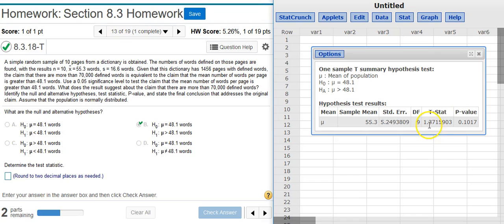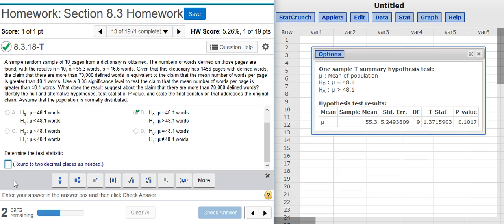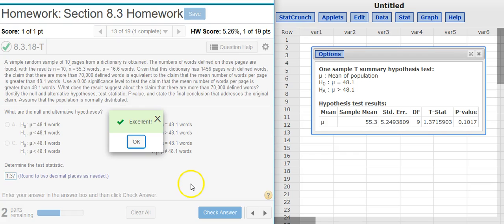Now I've got everything I need. I press Compute, and here my results window. Second to last value is the test statistic. I'm asked to round to two decimal places. Excellent.